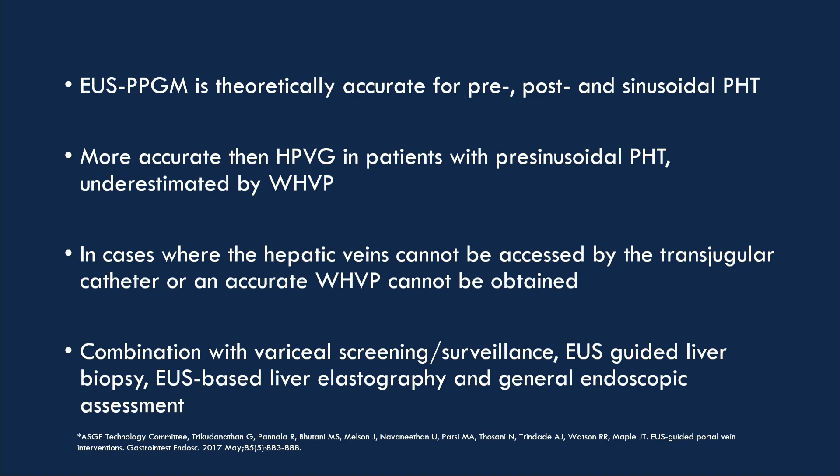To conclude, echoendoscopic portal pressure gradient measurement is accurate for pre-, post-, and sinusoidal portal hypertension. It's more accurate than indirect measurement in pre-sinusoidal portal hypertension. It can be used in cases where hepatic veins cannot be accessed or when wedged hepatic vein pressure cannot be obtained. Another advantage is that it can be combined with screening for varices, further surveillance, echoendoscopic-guided liver biopsy, echoendoscopic-based liver elastography, and other endoscopic assessment.